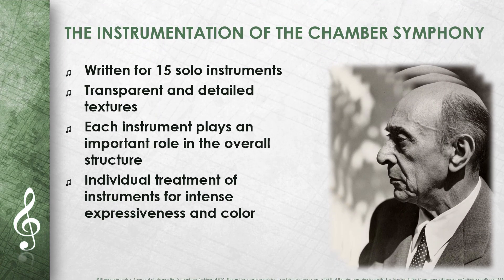The Chamber Symphony No. 1 is written for a lineup of 15 solo instruments: flute, oboe, cor anglais, two clarinets, bass clarinet, two horns, two violins, viola, cello, and double bass. This instrumentation allows Schoenberg to create transparent and detailed textures in which each instrument plays an important role in the overall structure of the work. The individual treatment of the instruments contributes to the intense expressiveness and colorfulness of the music.